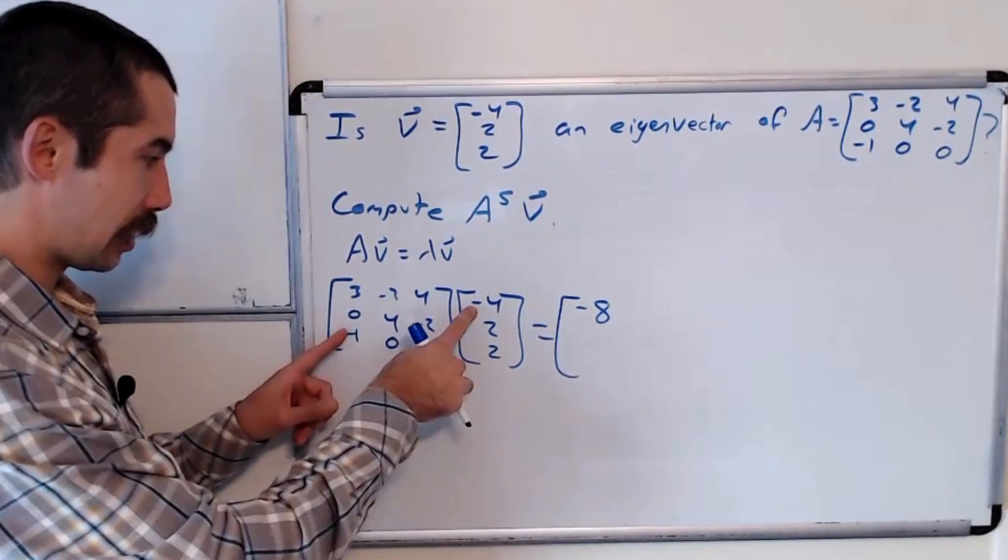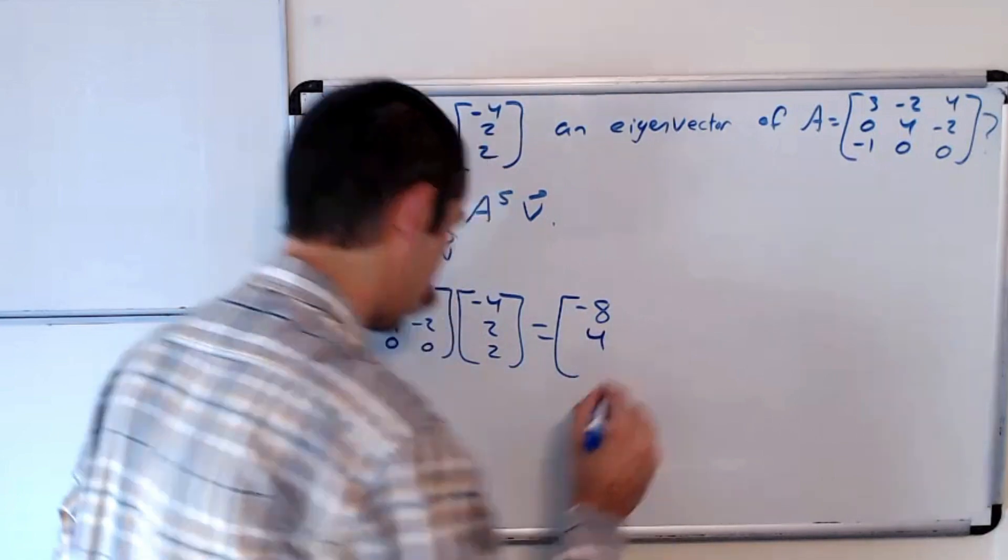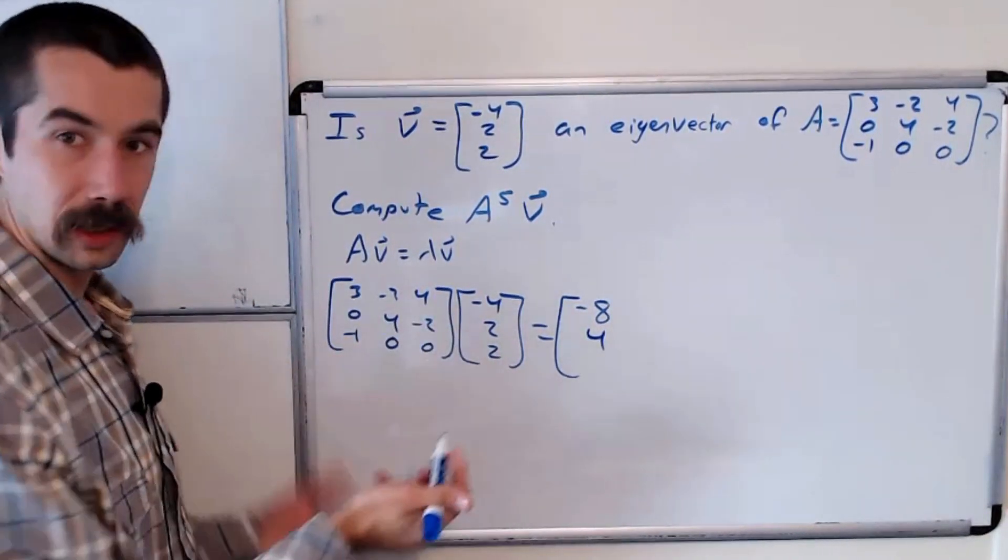This next entry is 0 plus 8 minus 4, which is 4, and the last entry is 4.